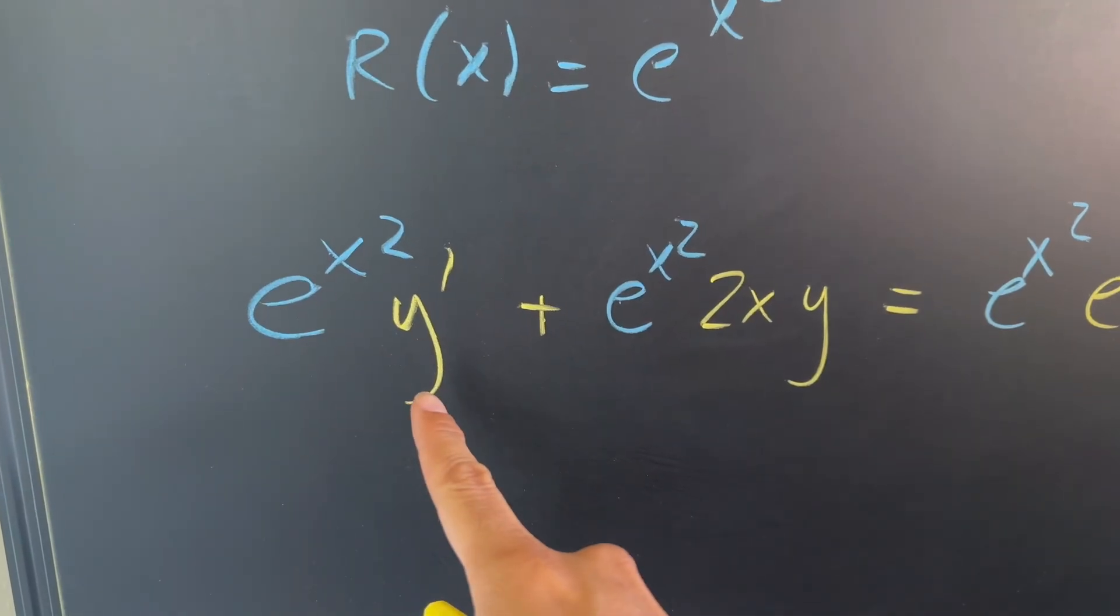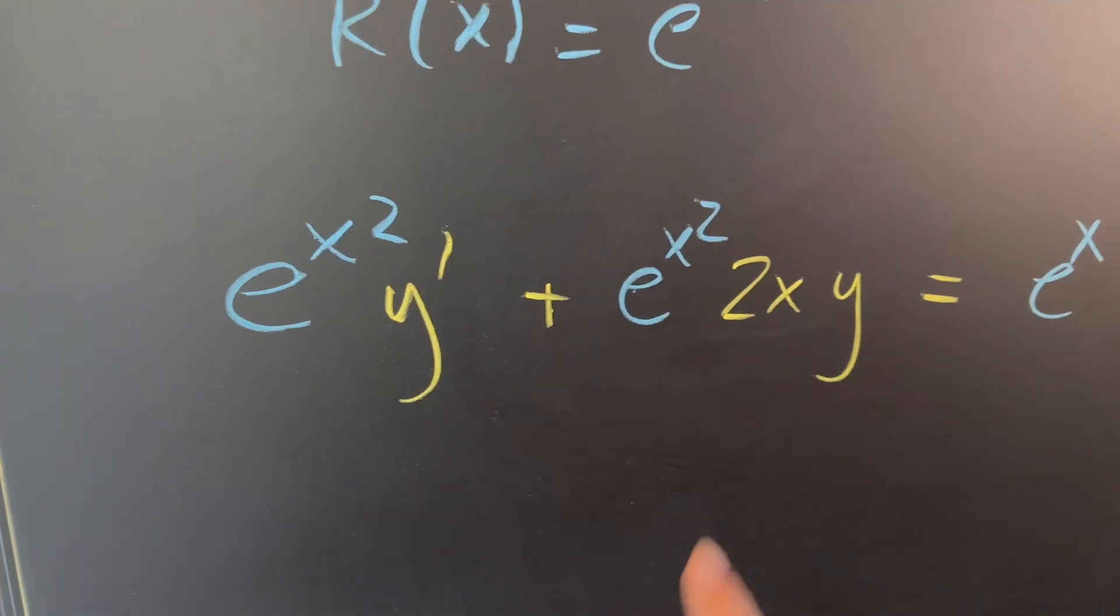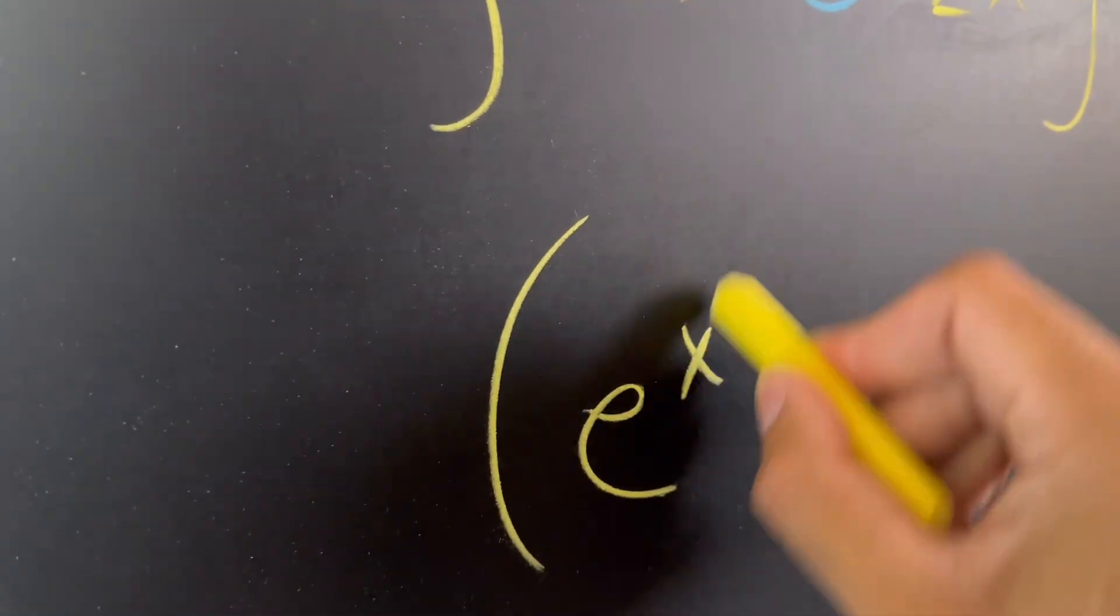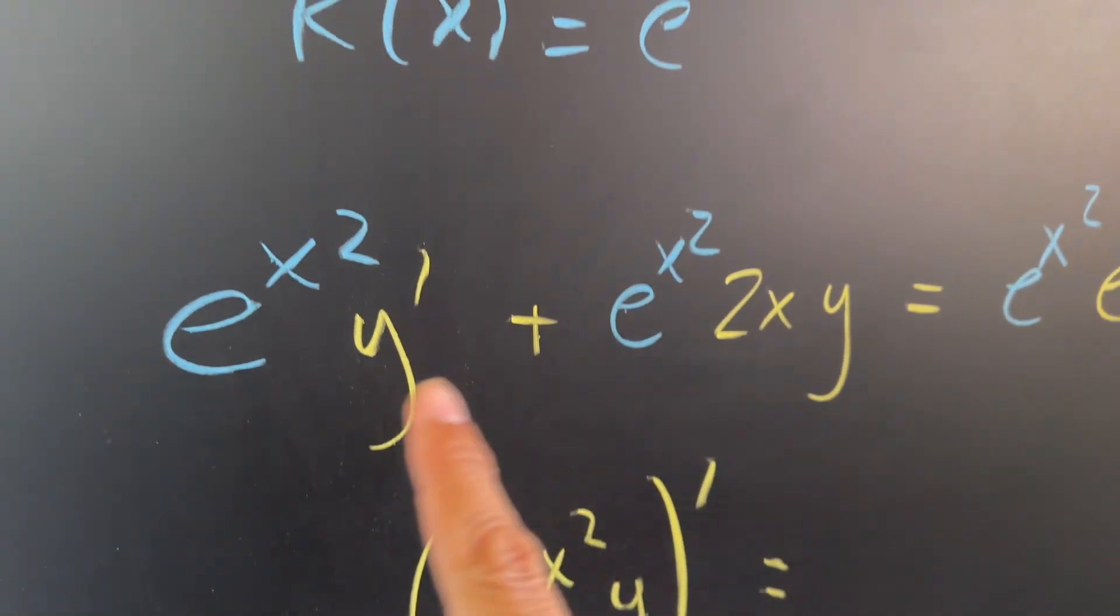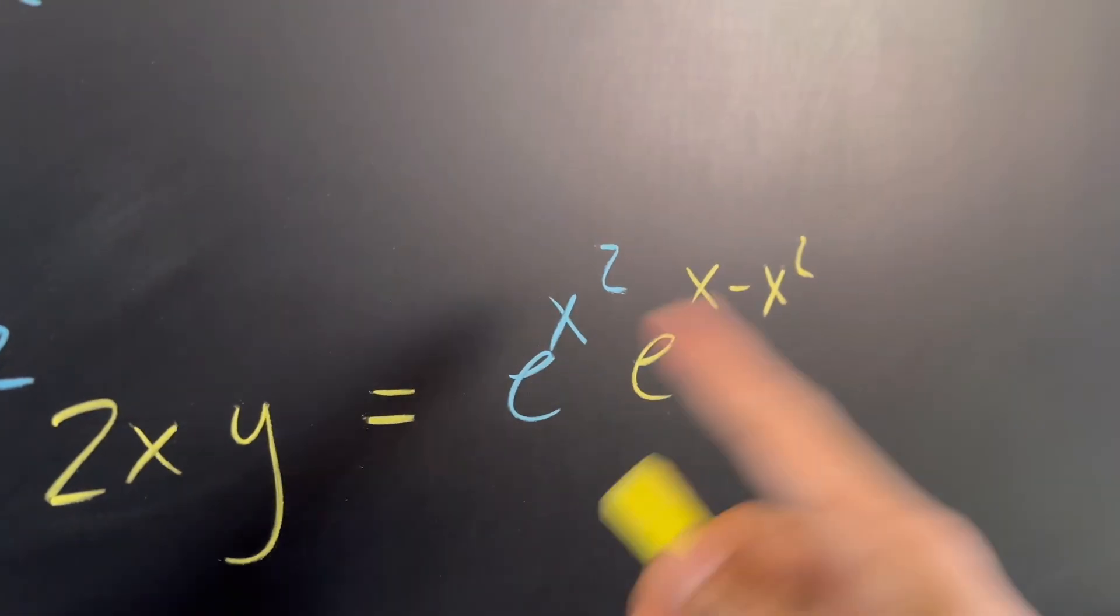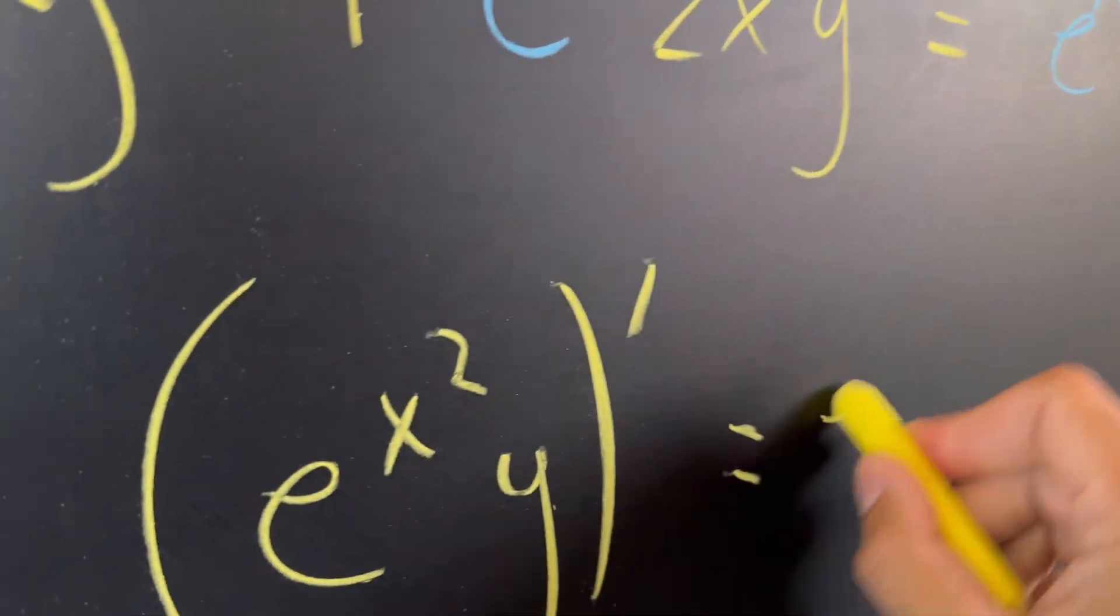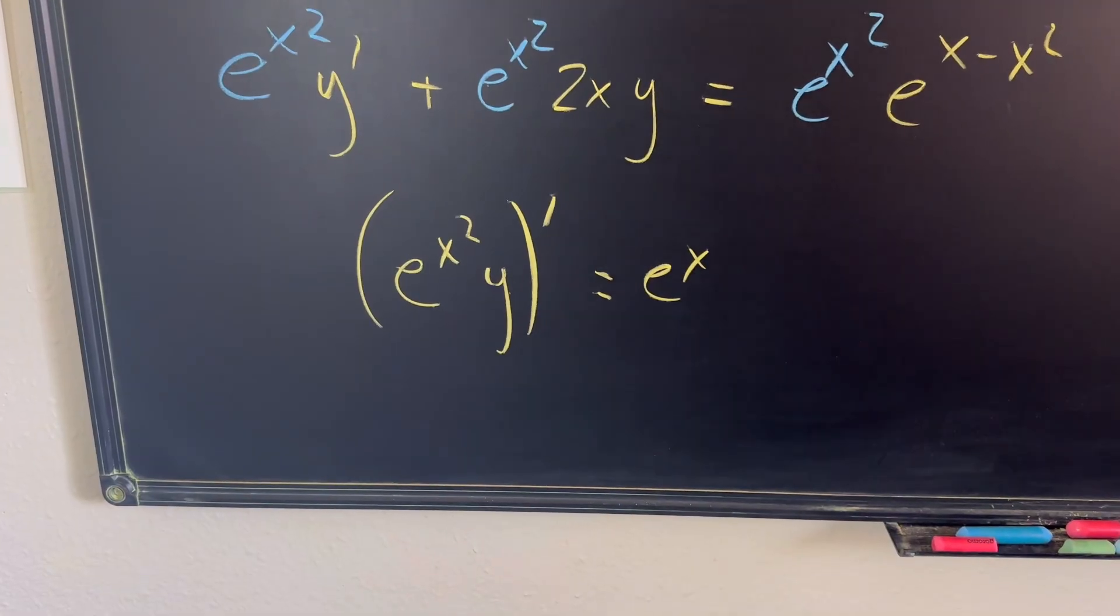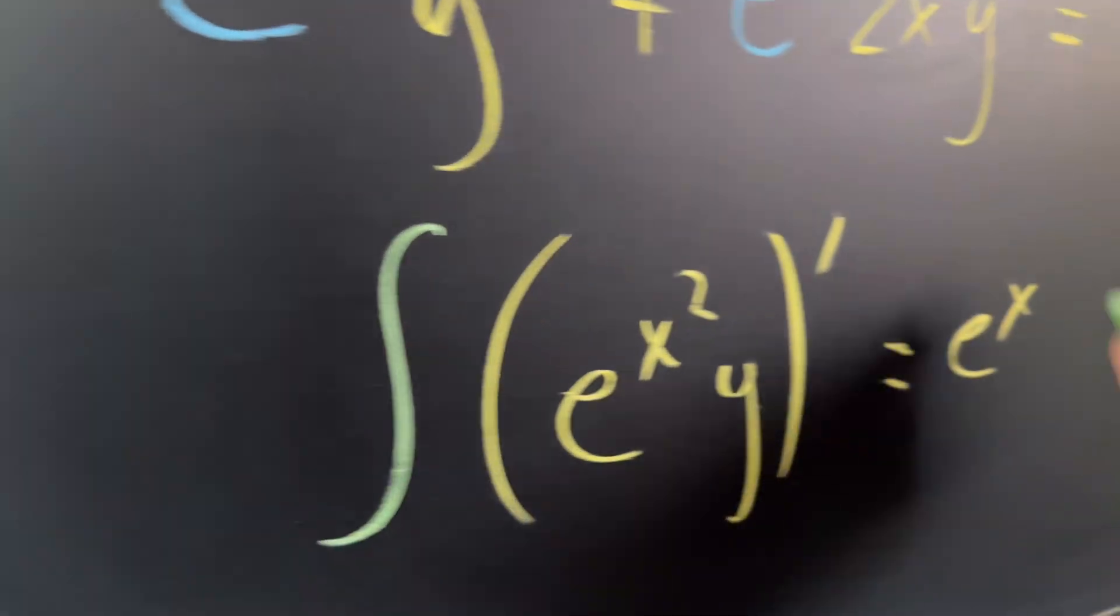We have this times the derivative of y plus this value, which is essentially the derivative of e to the x squared times y. So what we can say is that this is (e^(x²)y)', and that's the derivative of that. If you were to use product rule, you will see we will get the exact same thing on the left-hand side. On the right-hand side, we use properties of exponents and the x squared cancels. Now what we have is the derivative on the left-hand side and e to the x on the right-hand side.